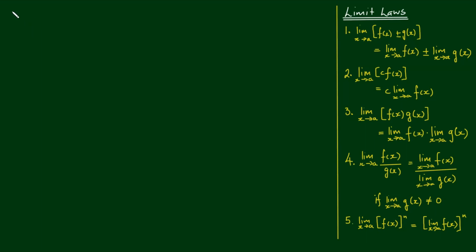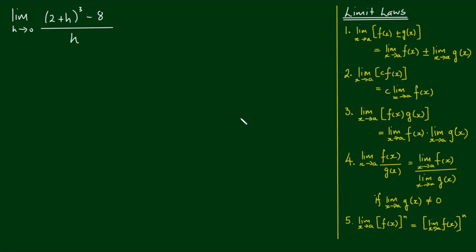Here's another good limit example: the limit as h approaches 0 of (2 plus h) cubed minus 8, all over h. To help us find this limit, we have a column of limit laws on the right-hand side. What you're going to see is that this is more of an algebra problem than a limit problem. But let's first have a go.